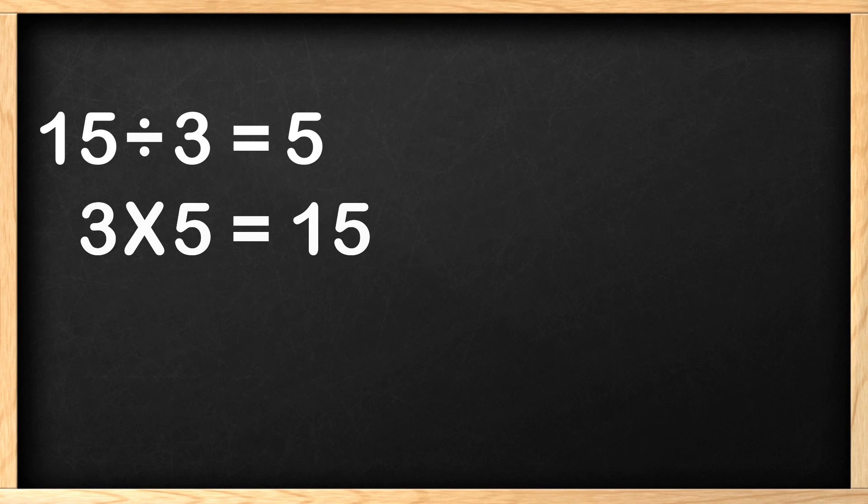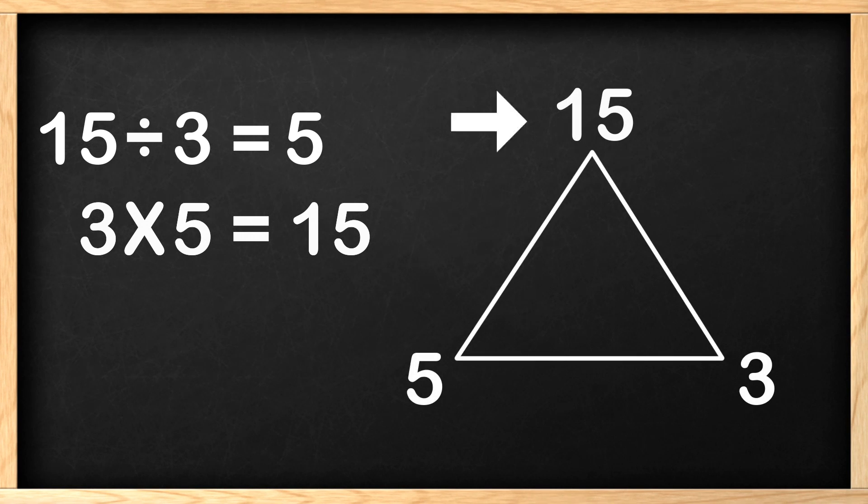We are going to look at the factor family, also called a factor tree. The 15 here is made up of the factors 5 and 3. 5 multiplied by 3 equals 15. 3 multiplied by 5 equals 15 as well. You probably already know all this, so let's see how division works with this factor family.